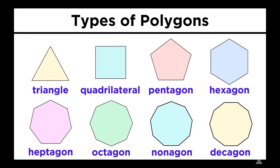Based on the number of sides or angles, polygons are named as follows: Triangle — three-angled polygon (tri means three). Quadrilateral or tetragon — four-angled polygon (tetra means four). Pentagon — five-angled polygon. Hexagon — six-angled polygon. Heptagon — seven-angled polygon. Octagon — eight-angled polygon. Nonagon — nine-angled polygon. Decagon — ten-angled polygon. Let us now know the number of sides, vertices, and each interior angle in a regular polygon.